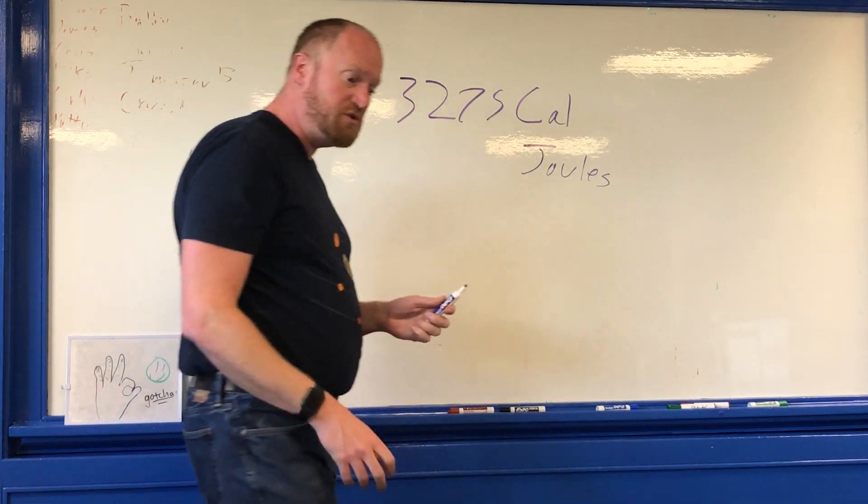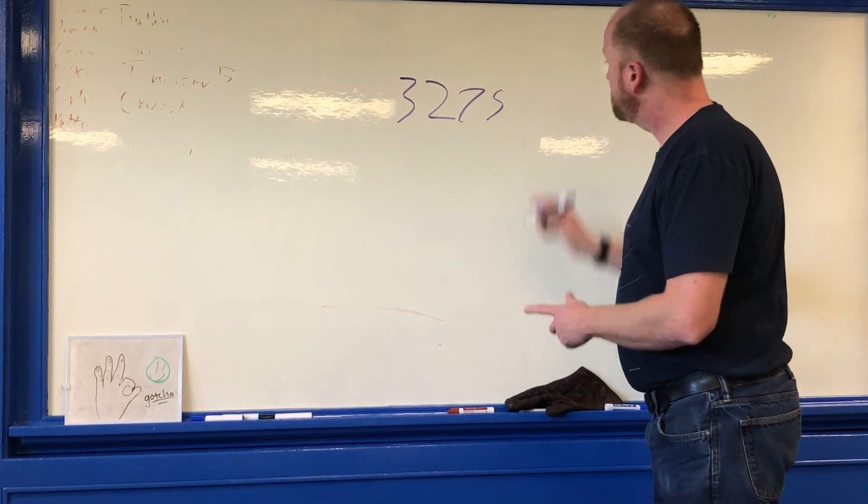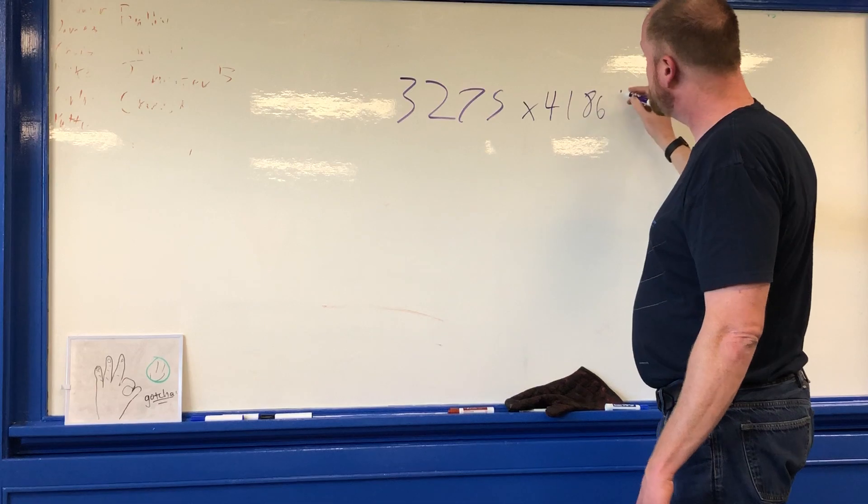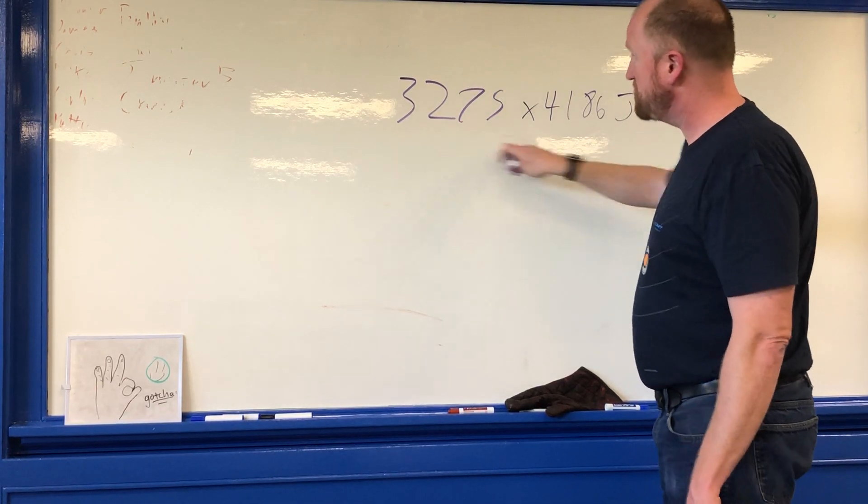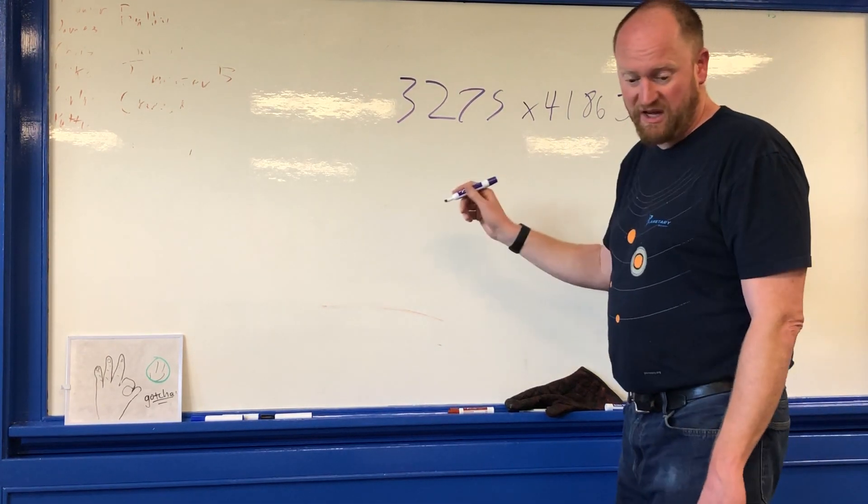Well, let's do it. There are 4,186 joules in a calorie. If I need this many calories and they're this many joules, I simply multiply them together and what do I get?